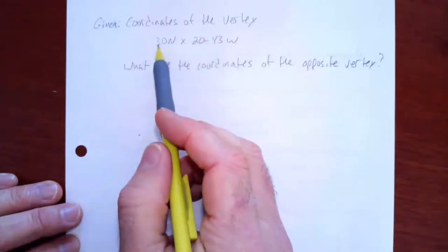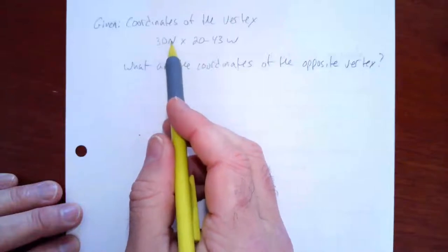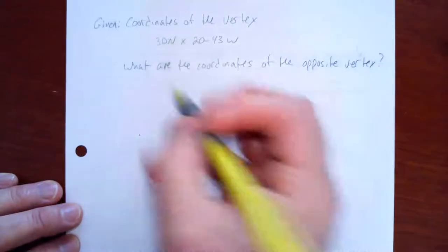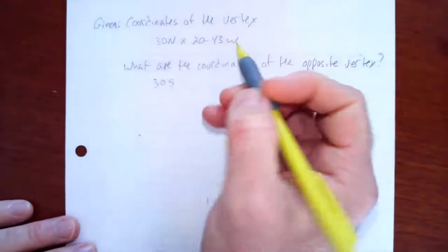So your vertex in the opposite hemisphere will always have the same numerical value just with a different sign. So what are the coordinates? It's going to be 30 south, and then what are we going to do with this longitude?